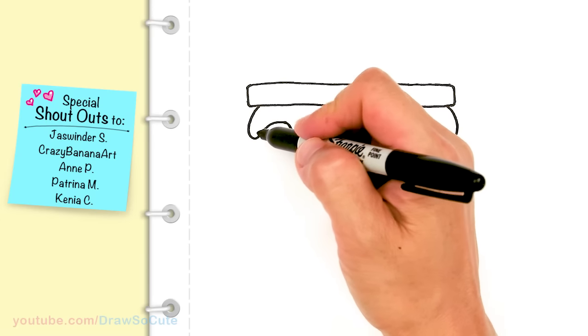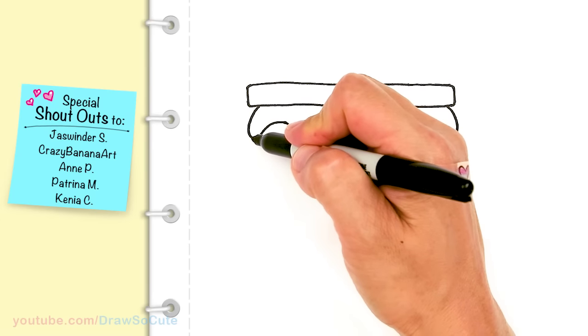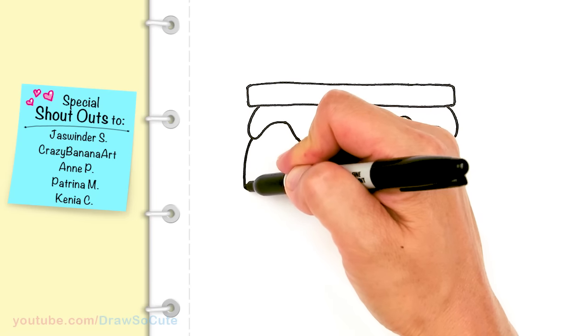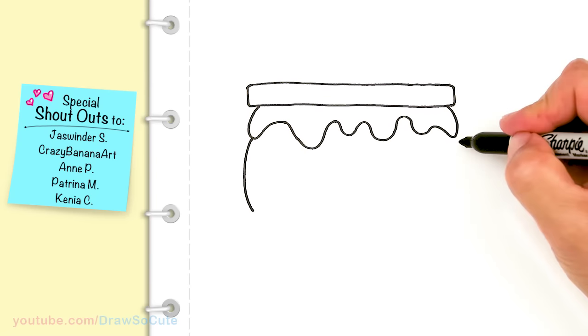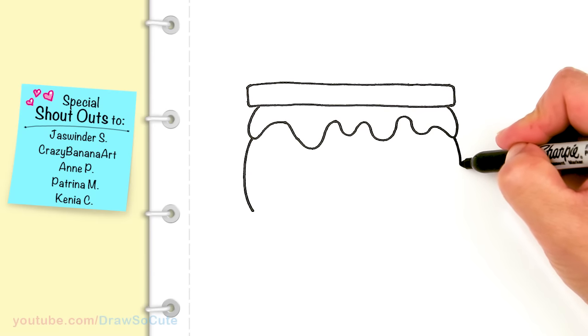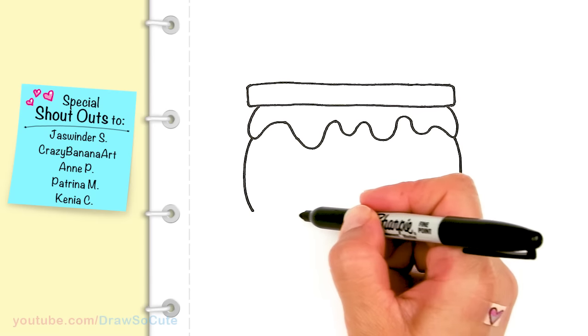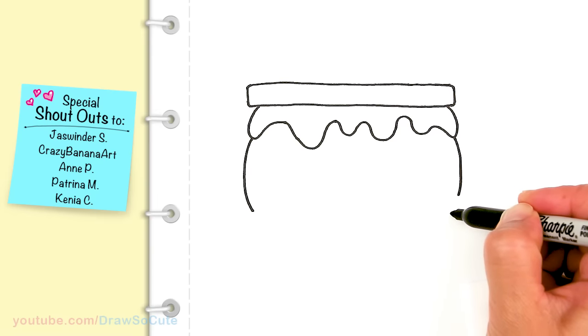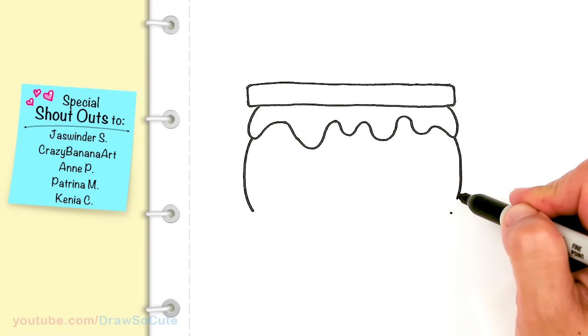Now to draw the cute yummy marshmallow. Right here I'm going to make it really nice and plump. I'm just going to draw a curve on both sides. I'm going to give myself a point and make sure I'm ending at about the same level on the other side.